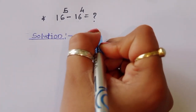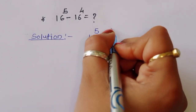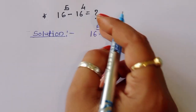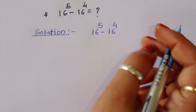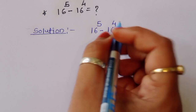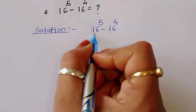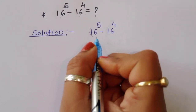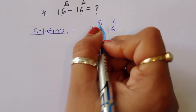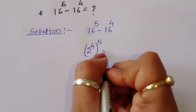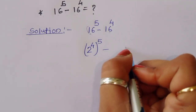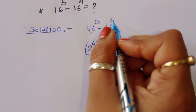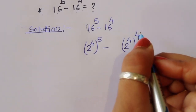16 power 5 minus 16 power 4 — this is a very big number. Now, we can write 16 as 2 power 4. So this becomes 2 power 4, power 5, minus 2 power 4, power 4.